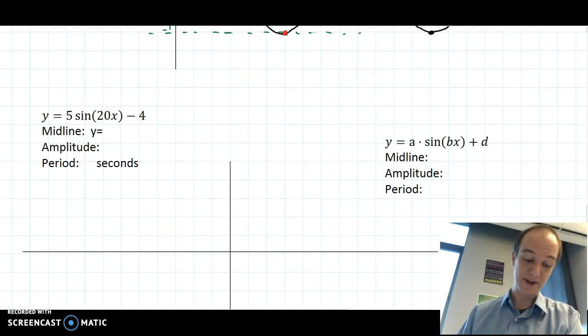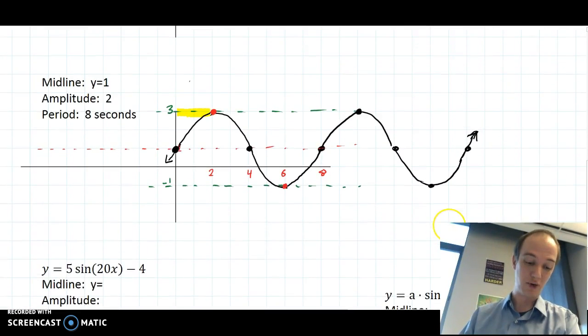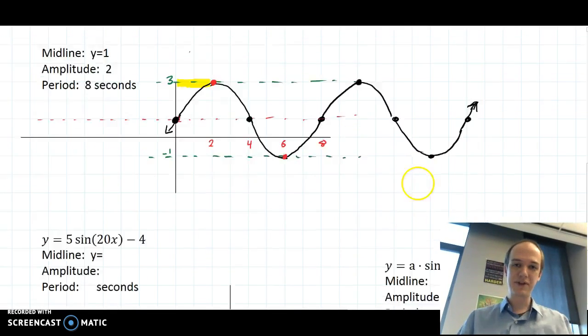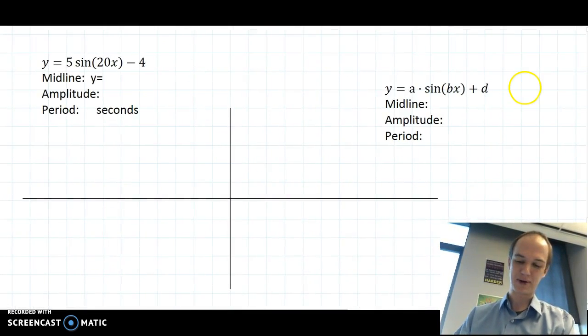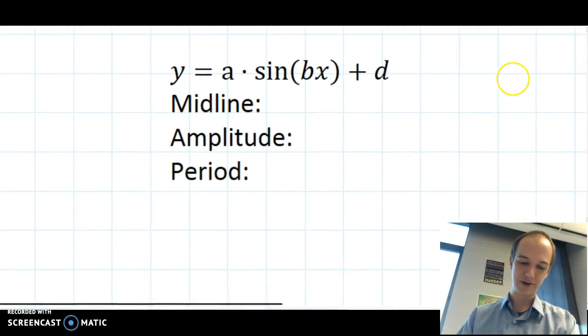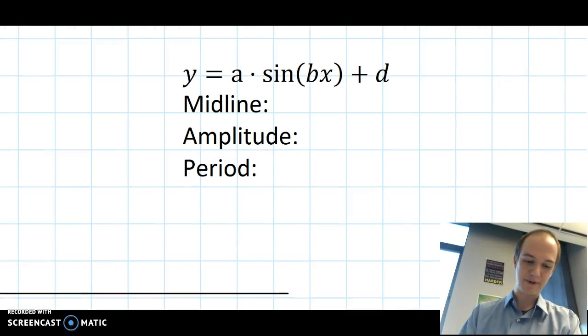Now we're going to graph something where you have the equation only. So for this one, if you have the midline amplitude and period, the graph is sort of simple. But here I didn't give you any of that stuff. So before we can graph this one, I want to take a look at the general form equation. The general form equation of a sine function is y equals a sine of bx plus d.